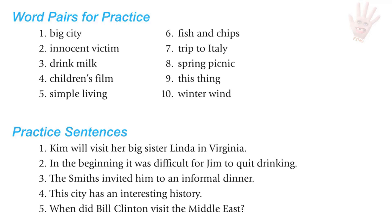Sentences for practice with I: Kim will visit her big sister Linda in Virginia. In the beginning, it was difficult for Jim to quit drinking. The Smiths invited him to an informal dinner. This city has an interesting history.